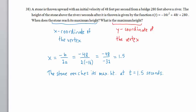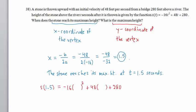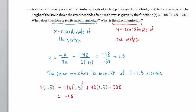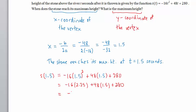What is the maximum height — the y-coordinate of the vertex? That is what we get when we plug in 1.5 for t. We call it s of 1.5. We calculate it by replacing t with 1.5: negative 16 times 1.5 squared plus 48 times 1.5 plus 280. This is negative 16 times 2.25 plus 48 times 1.5 plus 280, giving us negative 36 plus 72 plus 280, which equals 316 feet — the maximum height of the stone.